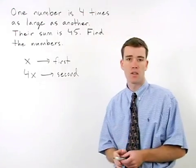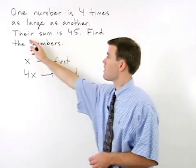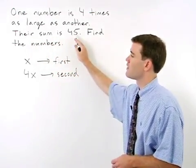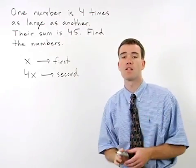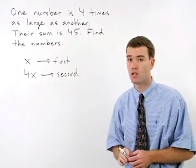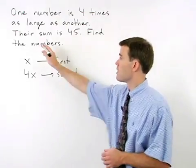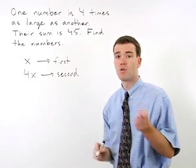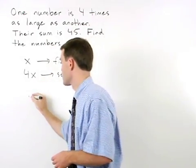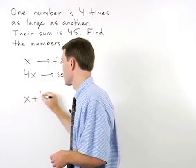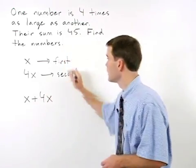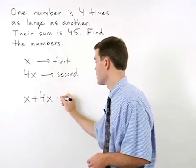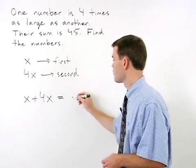Now let's look at the second sentence. Their sum is forty-five. The second sentence will tell you how you're going to set up your equation. Their sum, if our variables are x and 4x, will be x plus 4x. Is means equals forty-five.